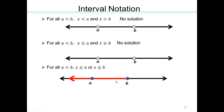Now, x less than or equal to b OR x greater than or equal to a means the whole number line is covered, because you can either be above a or below b, which means you can be anywhere on the number line. So that would be all real numbers, written as negative infinity to infinity with round brackets. Round brackets because infinity can never be captured.